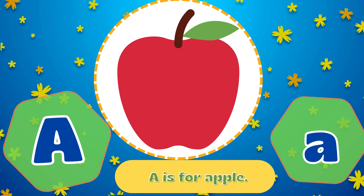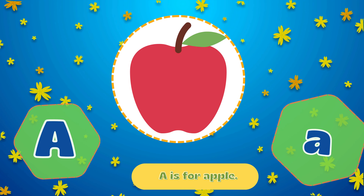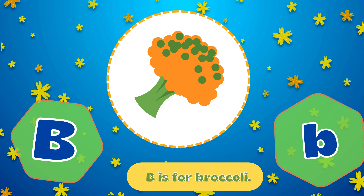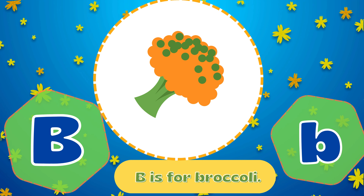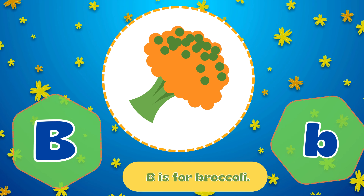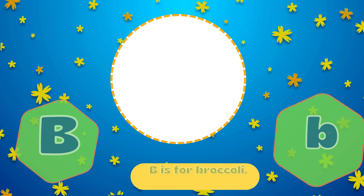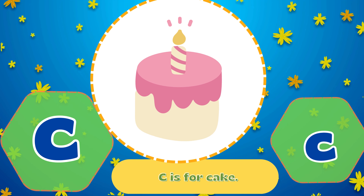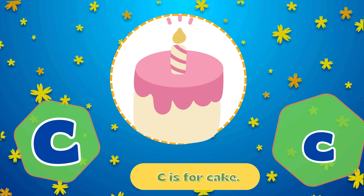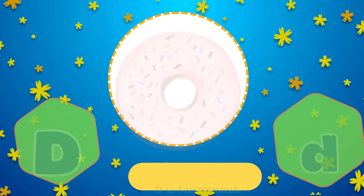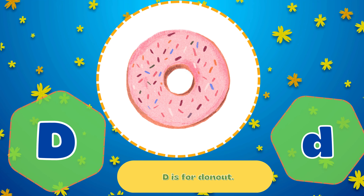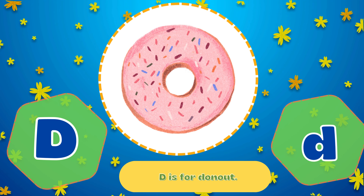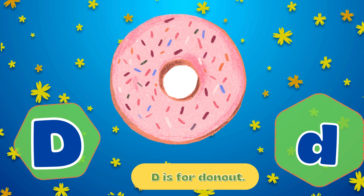A is for Apple. B is for Broccoli. C is for Cake. D is for Donut.